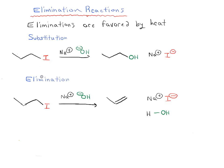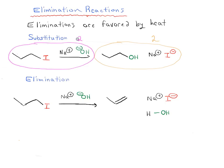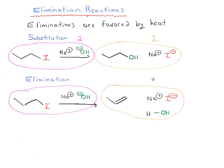What might thermodynamics have to do with each of these reactions? Let's look at the number of species getting involved in each reaction. In the substitution reaction, we're starting with two species in solution — the iodide and the sodium hydroxide — and ending up with another two. So we're going from two to two. With our elimination reaction, we start again with two starting materials and end up with three: propene, sodium iodide, and water. So with elimination, we're going from two to three — we have an increase in species in solution.